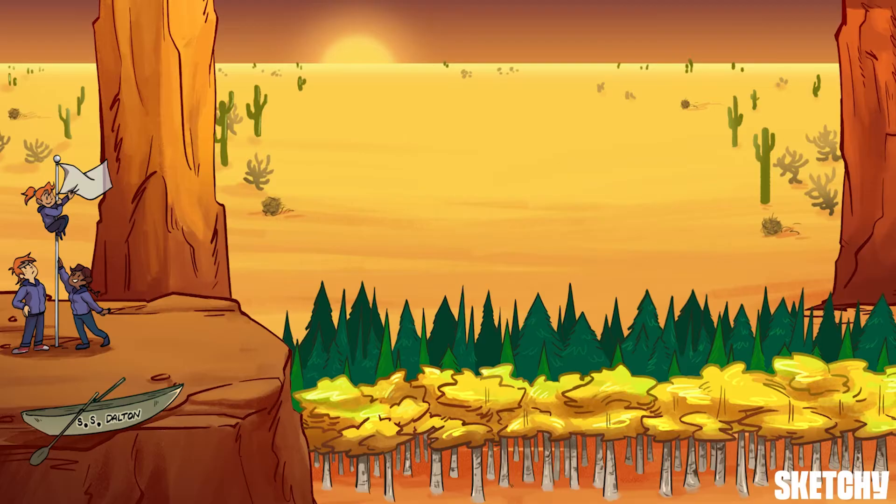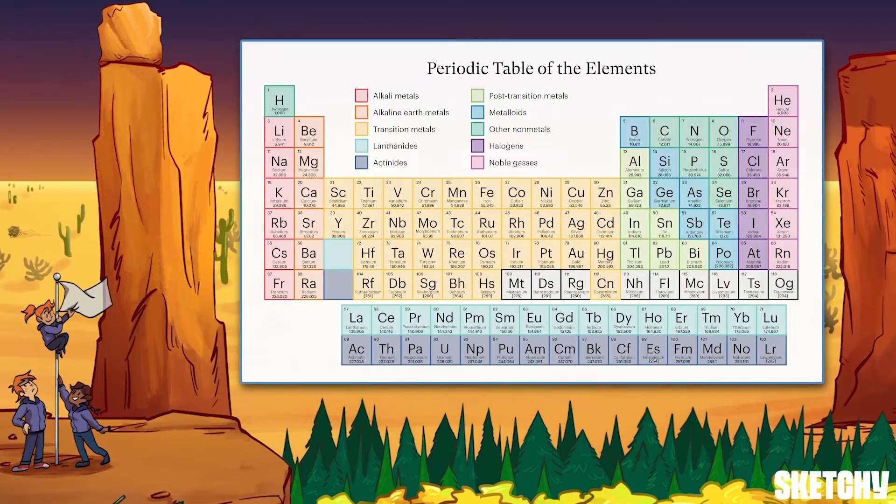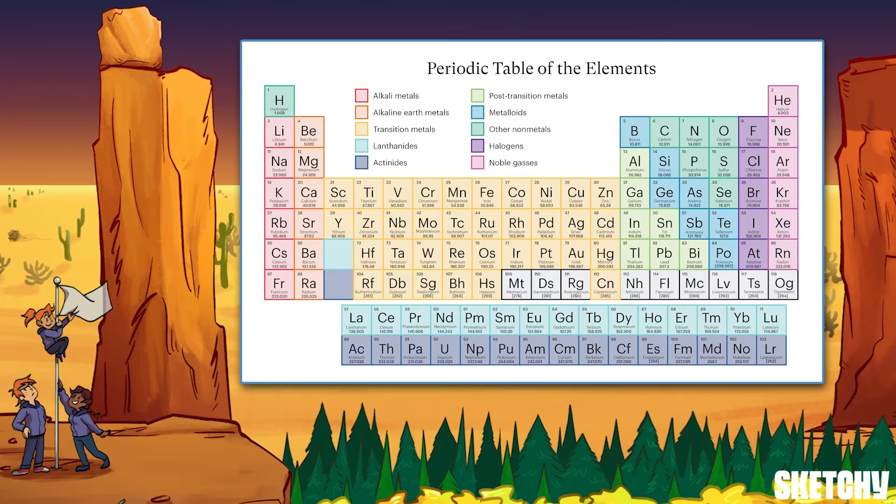Next time they could at least strap a helmet onto little sis. Or, you know, just forego packing an entire flagpole. All right, I've seen about all I need to at base camp. Next, we'll tour this periodic landscape to cover the names and some of the basic properties of the major types of elements.